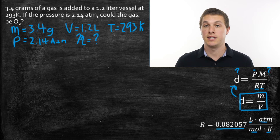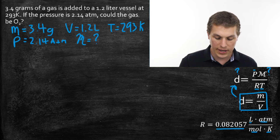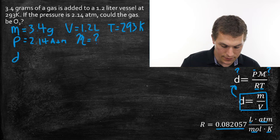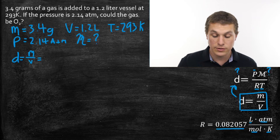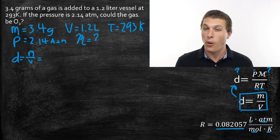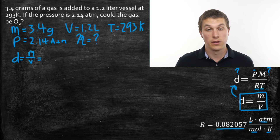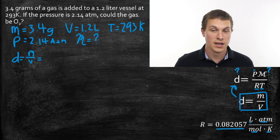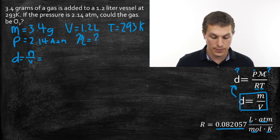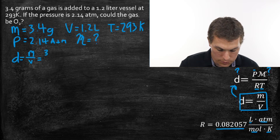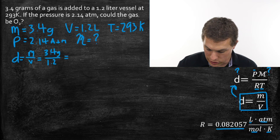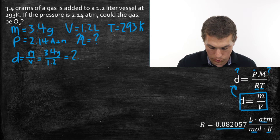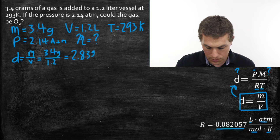Since we don't have density and we need it to find molar mass, our first step is to calculate the density of this gas. Density equals mass divided by volume, and when using this in the ideal gas law equation we always need it in grams per liter. We take 3.4 grams and divide by 1.2 liters, giving us a density of 2.83 grams per liter.